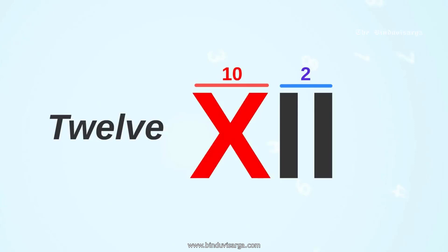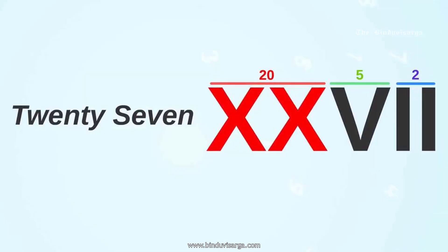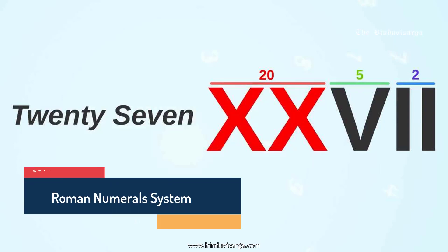One more example: 27. We have double X, so one X equals 10, so double X is 10 plus 10 — that's 20. V represents 5, and double I represents 1 plus 1, which is 2. So 20 plus 5 plus 2 equals 27.